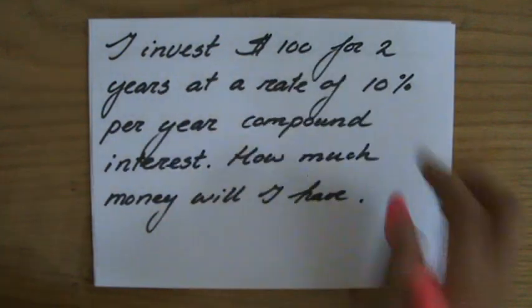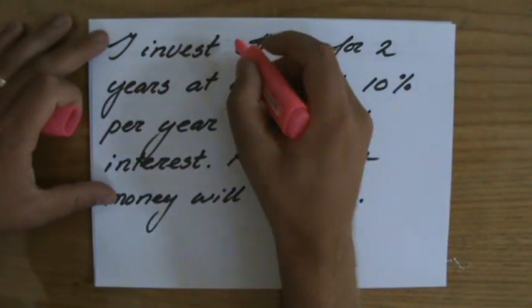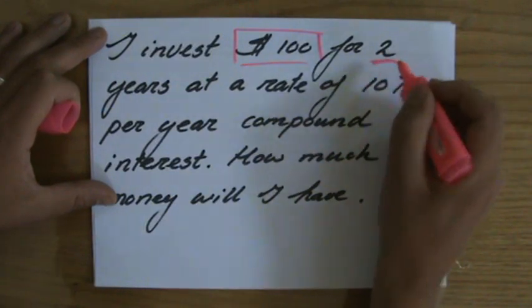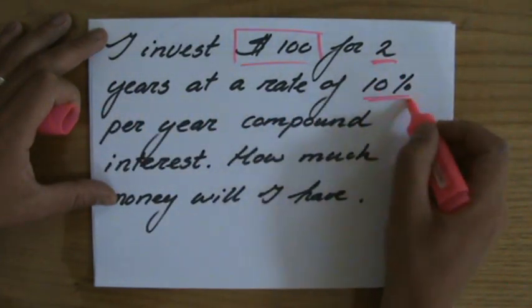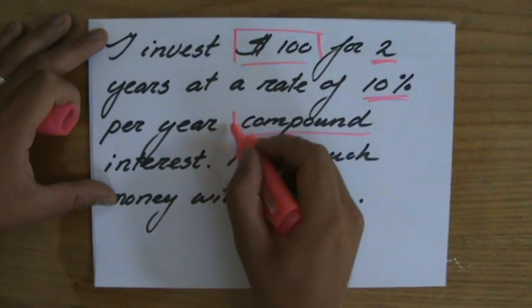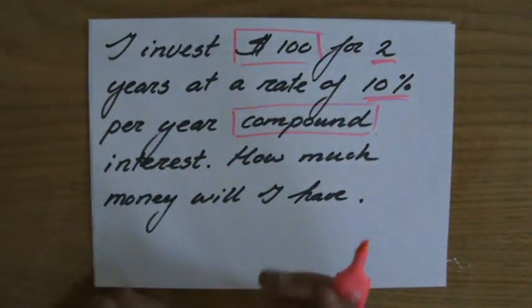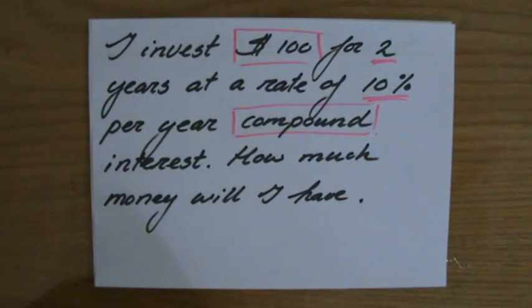I invest $100 for two years at a rate of 10% per year compound interest. And the question is how much money will I have, so the amount of money I have in total.